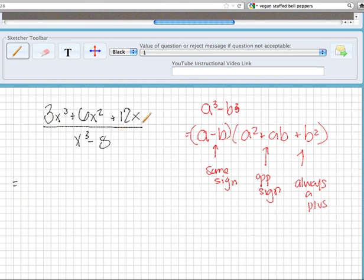Let's go ahead and start by factoring out the top. With the top, we can just factor out a monomial.